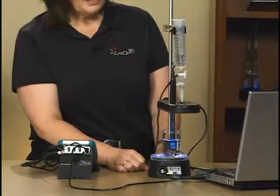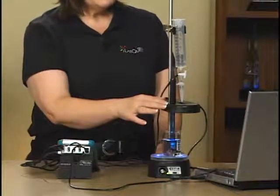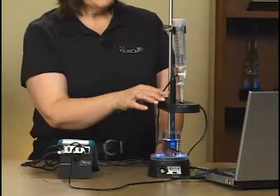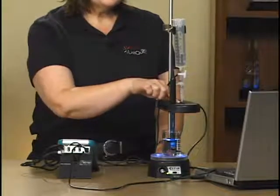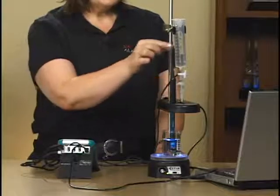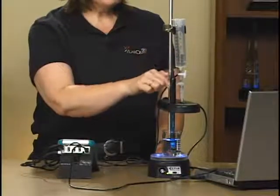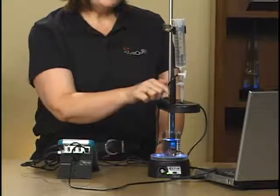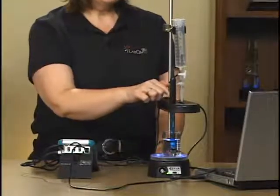The drop counter itself is made of two pieces. This part is the part that actually counts the drops. An infrared beam of light goes through this little slot on the top, and as the reagent reservoir drops through the slot, they will break the beam and count each drop. The software will then convert those drops into volume in milliliters.